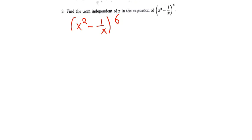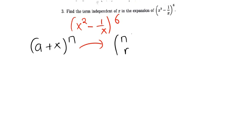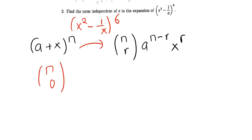We already understand that if you're going to have a binomial in this form — let's call it a plus x raised to the power n — to find any term of that expansion we can use the formula: n choose r, times a to the power n minus r, times x to the power r. So if you want the second term, since we start counting from 0, it will be the term having n choose 1.